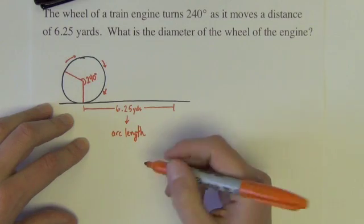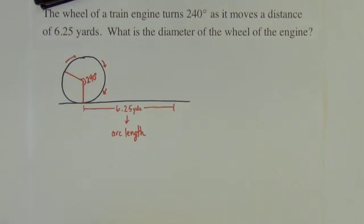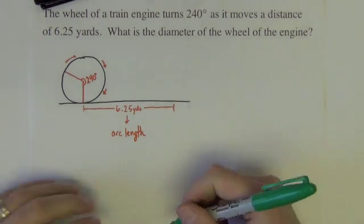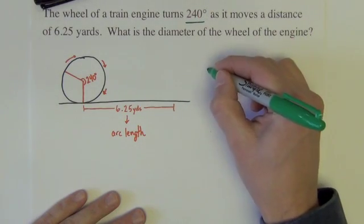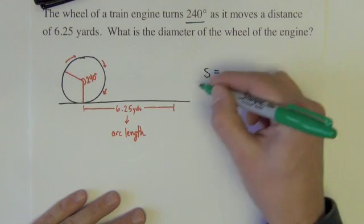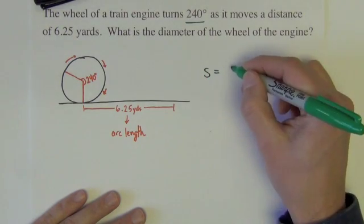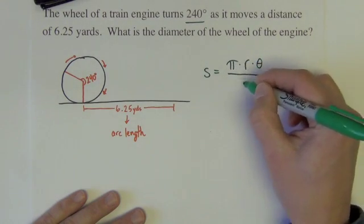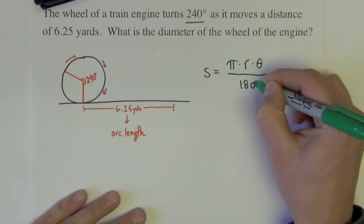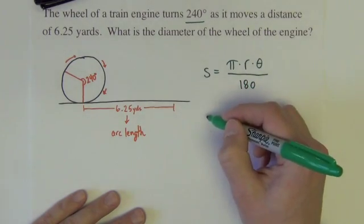And so this is an arc length problem. And so we have a formula that relates the arc length and the radius of a circle, if the angle is given in degrees as it is here. And that formula is S. S is the arc length. S equals pi times r times theta divided by 180.